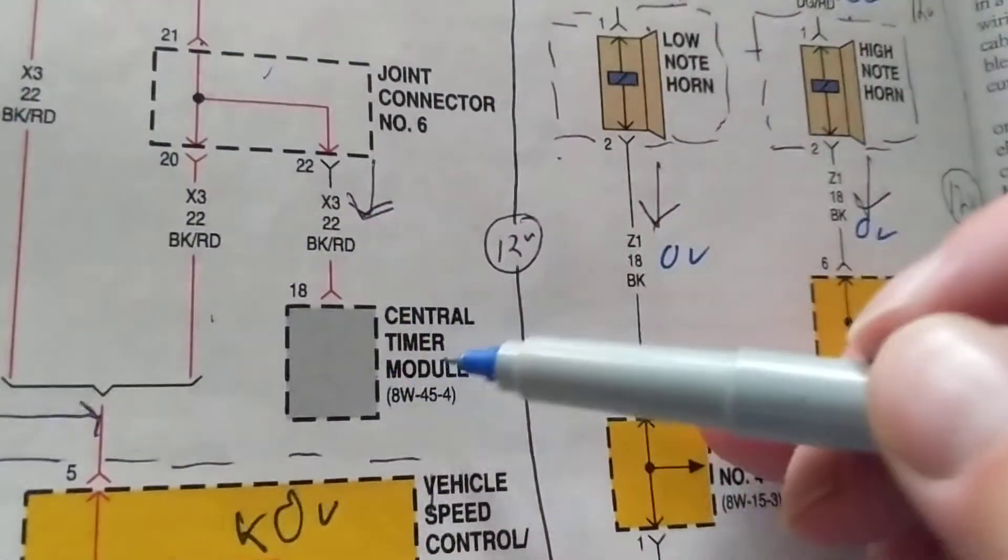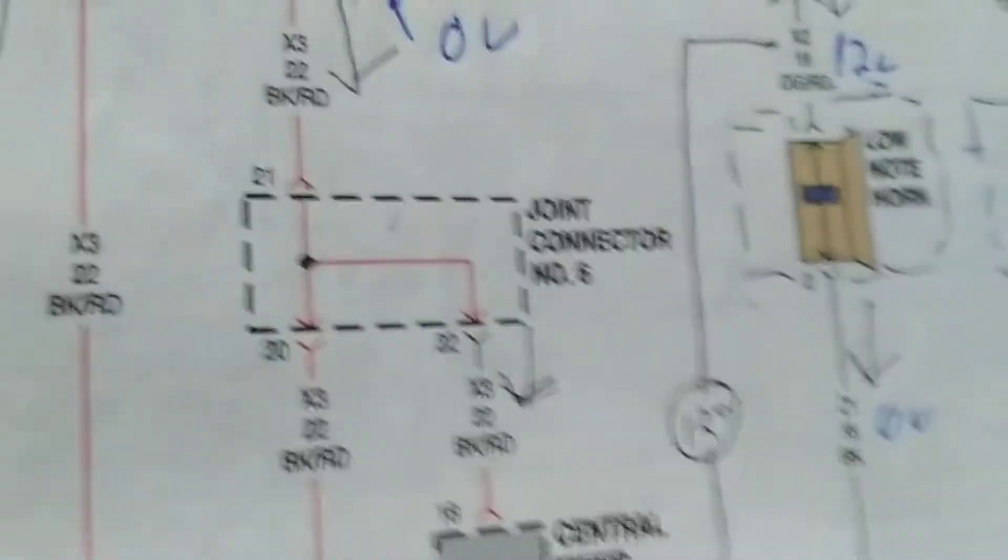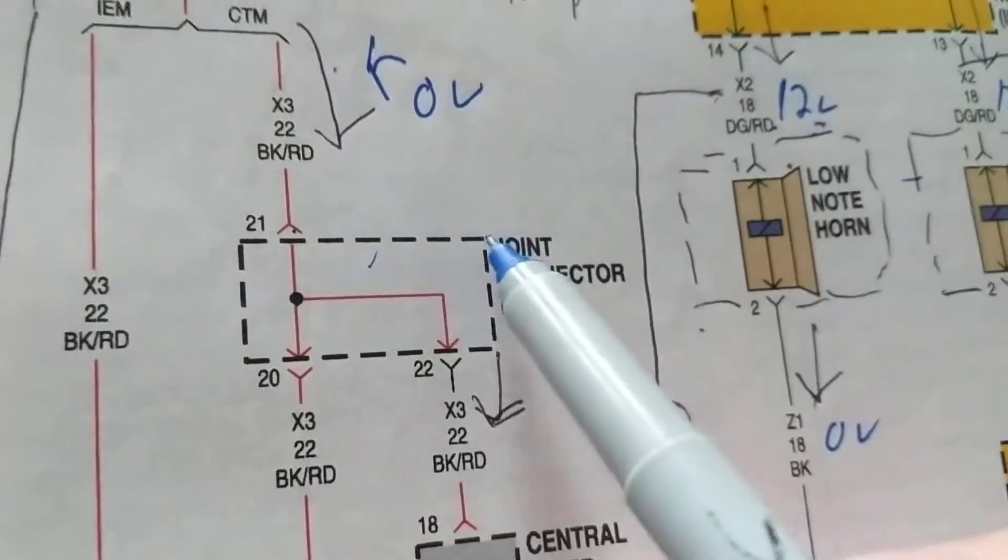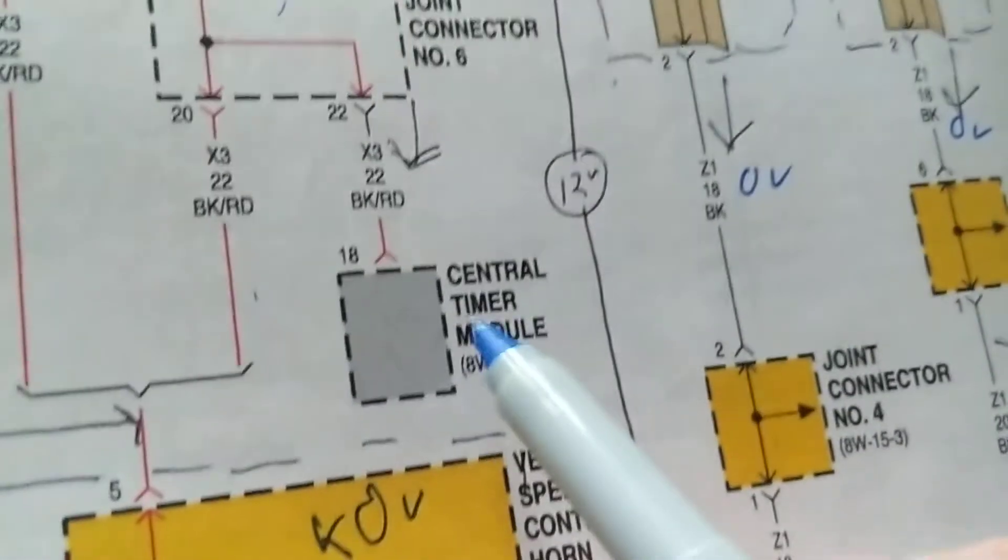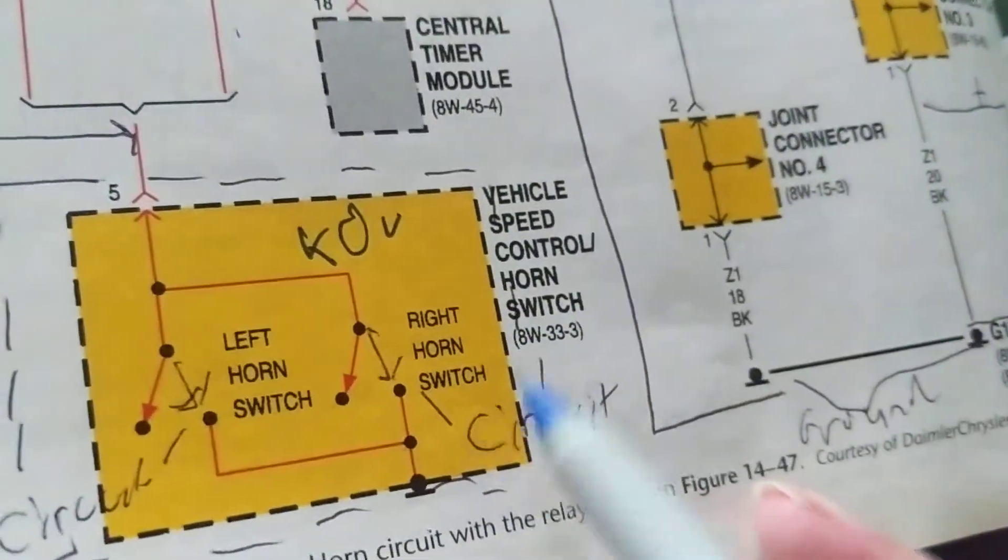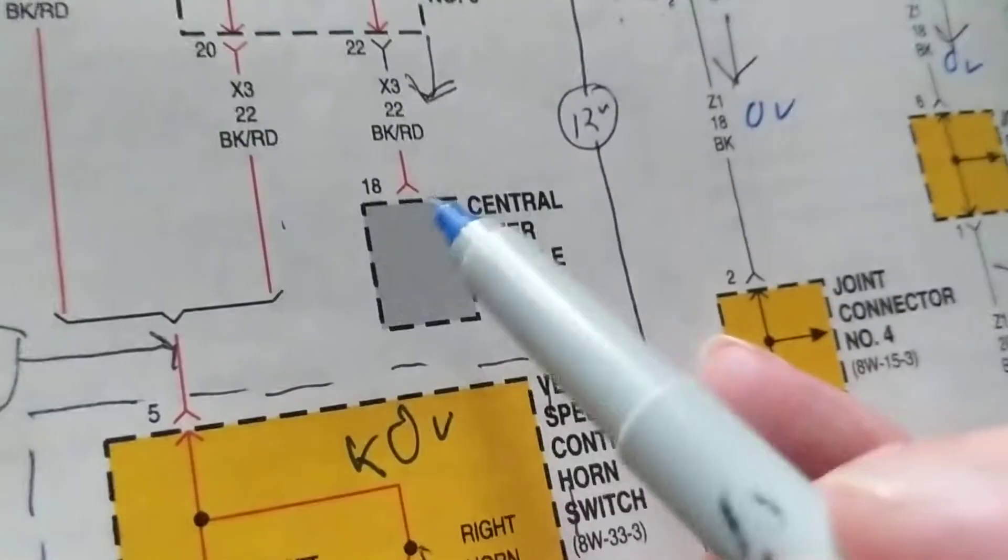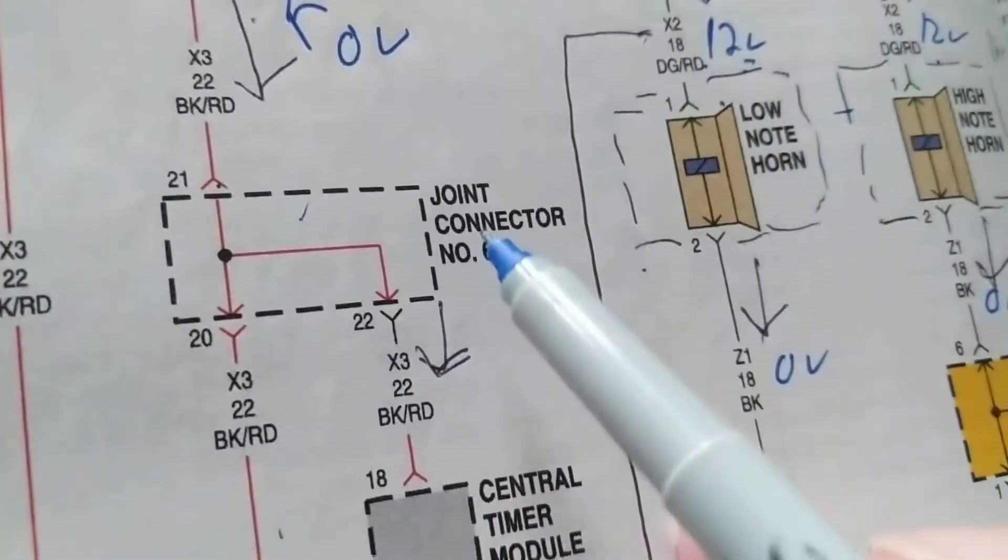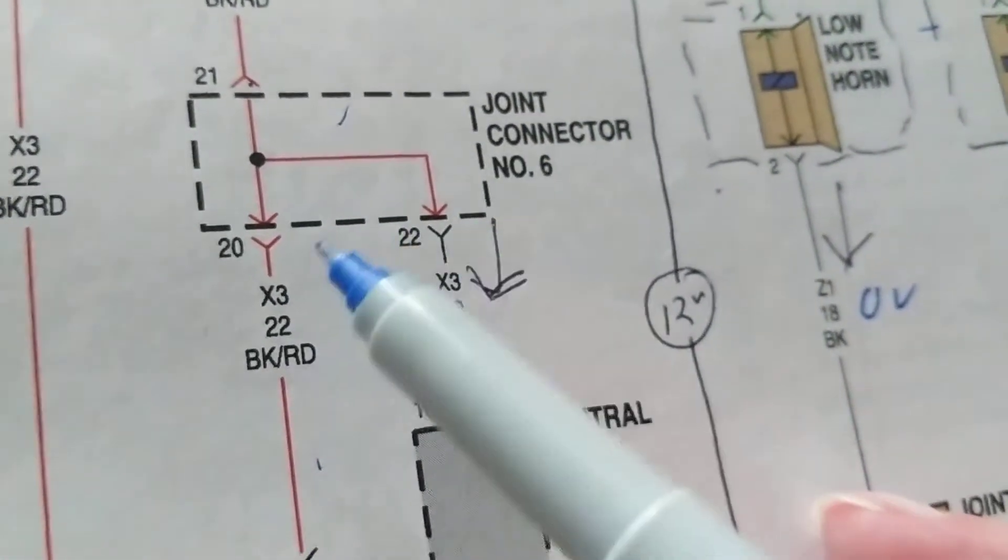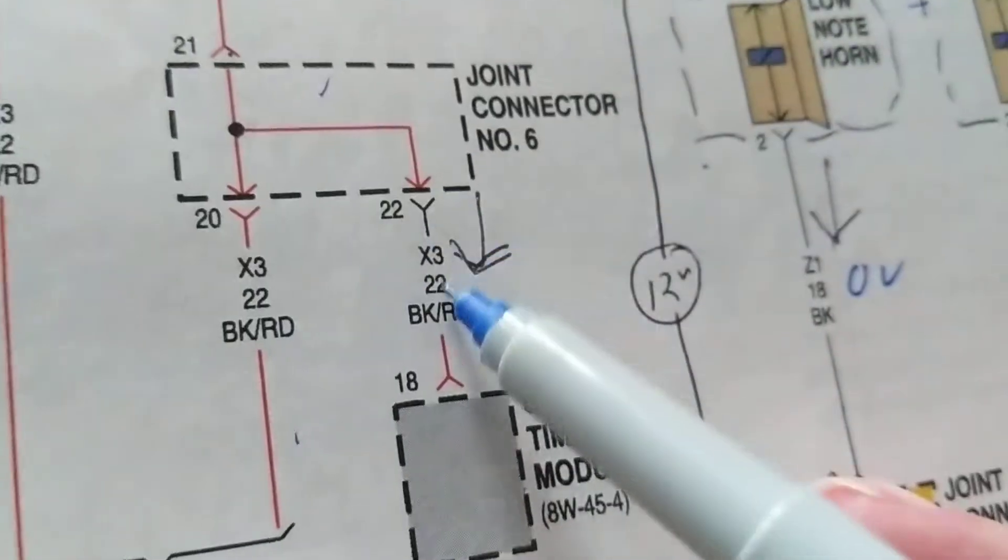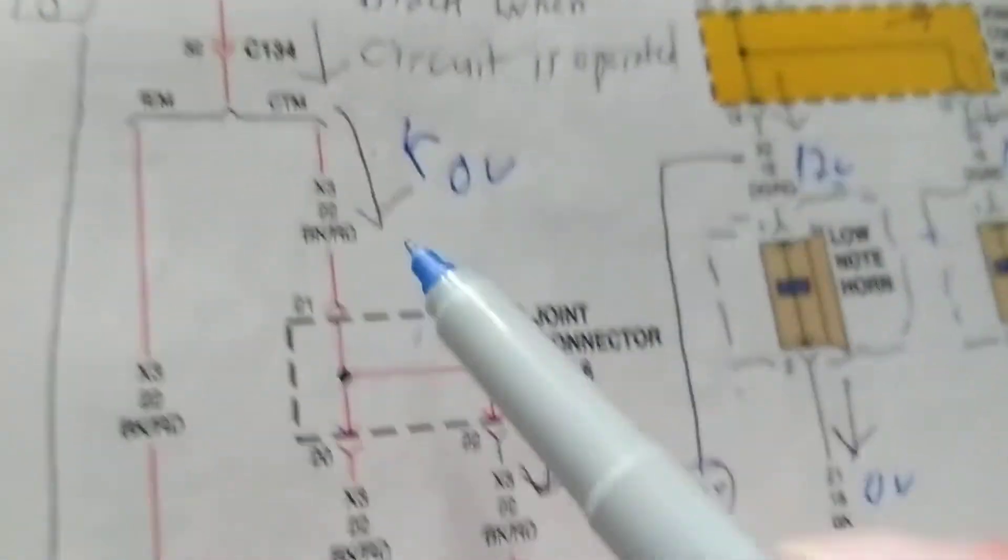As you see over here, there is a module, central timer module, which is pin 18. These numbers indicate pins or terminals. You see this dash dotted line - that means there is something here, a joint connector here or a module. So when you see dotted lines it represents either switches which are internal, which when you replace you replace both, or when you replace this you replace the whole module. We come in pin 21, we come out pin 22. Pin 22 goes to a module - that module will give this a ground, which we need.